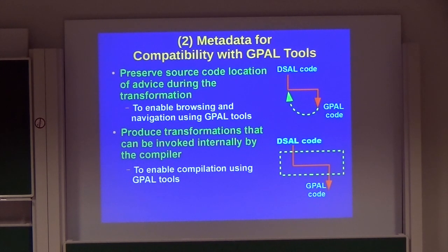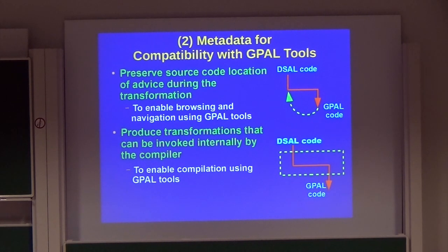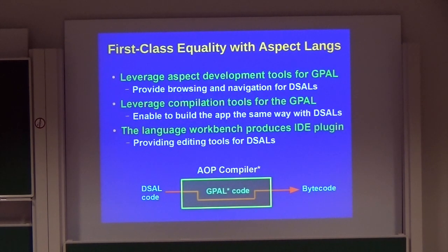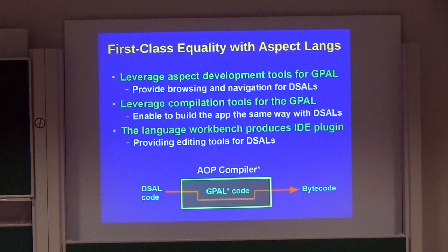With that we achieve first-class equality with DSLs. The process of implementing the DSAL becomes similar to that of a DSL — we don't need to modify any compilers or integrate with the weaver, and we can leverage existing tools for DSLs. The second type of metadata is for achieving compatibility with GPLs: it stores the source code location of advice as it was in the original DSAL code, and it allows us to produce standalone transformations that the compiler can invoke internally, enabling us to leverage aspect development tools and reuse build tools.